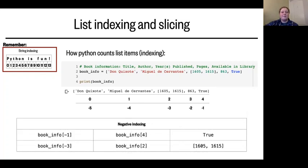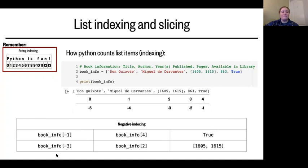There's another way to index lists using negative indexing. Negative one is the last position, negative two is second to last, negative three is third to last, and so on. So book_info[-1] is the same as book_info[4], which is the Boolean true. And book_info[-3] is the same as book_info[2], giving us our list of publication dates. Negative indices are especially helpful with very long lists when you want to cut right to the end.